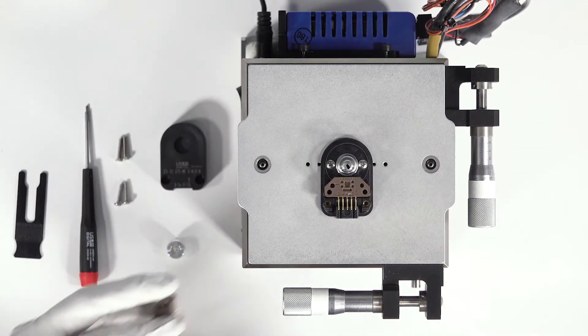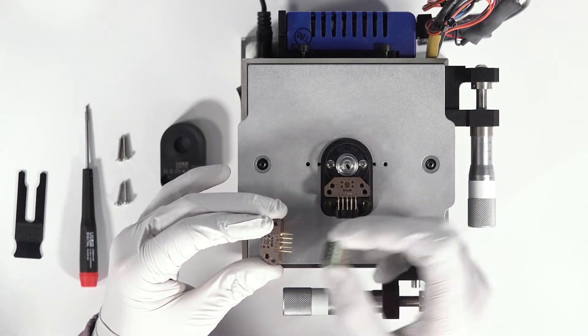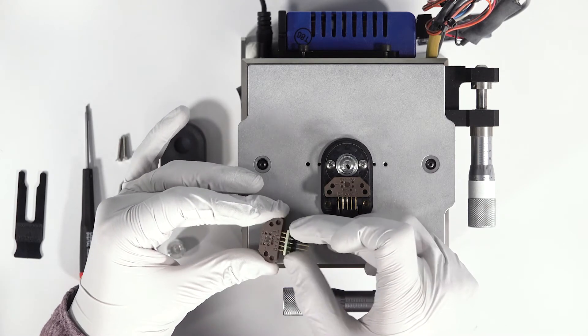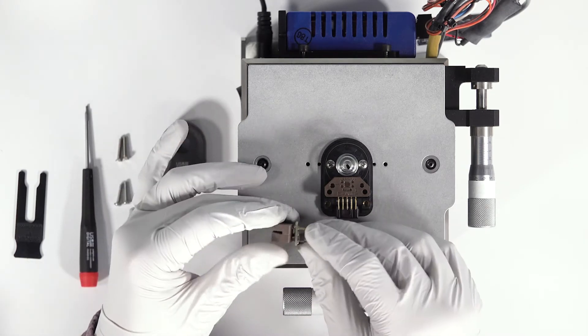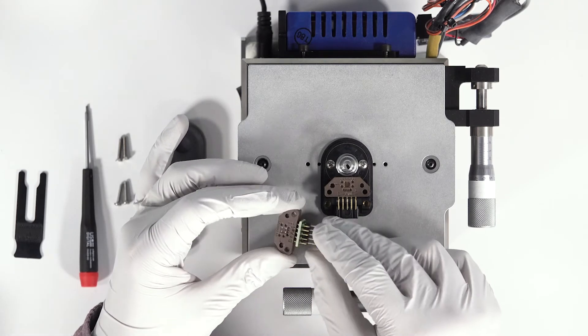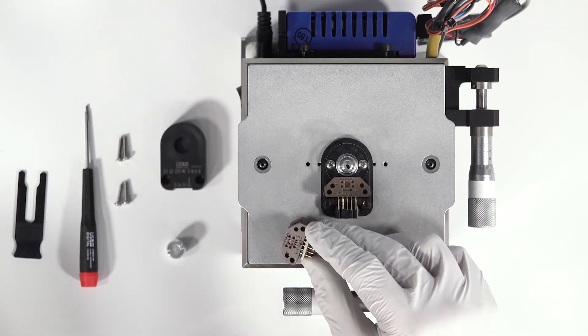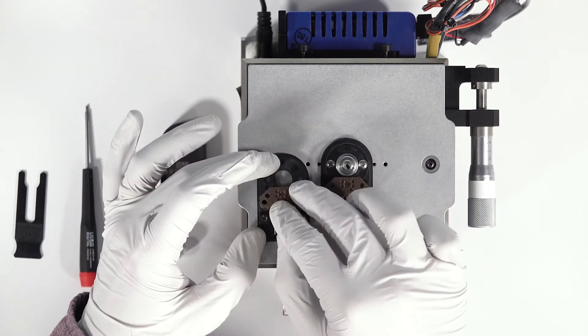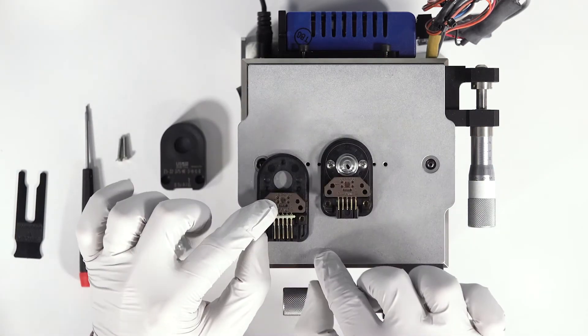If you're using the differential version, then you'll take the line driver and the module and carefully slide the line driver onto the five pins of the module. Use caution, the pins are sharp and they can be bent. And then it installs onto the base the same way, snaps into place.